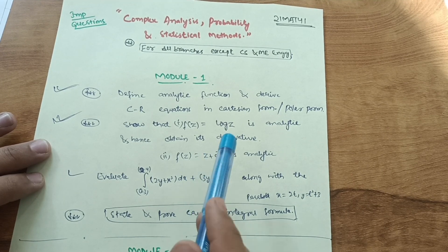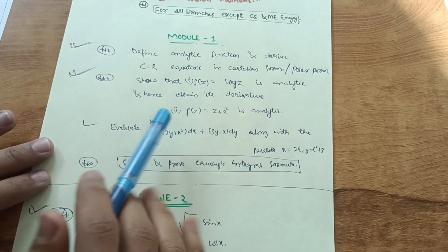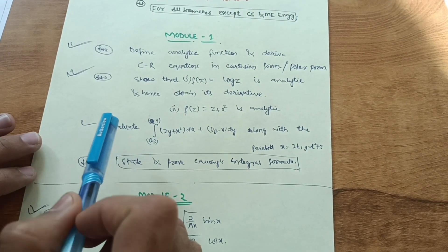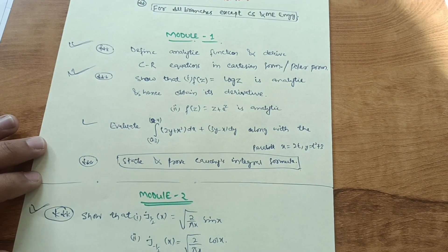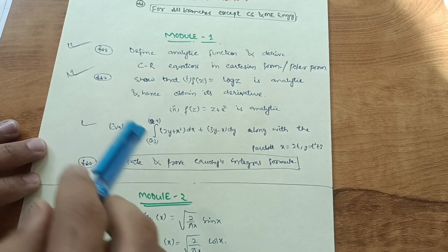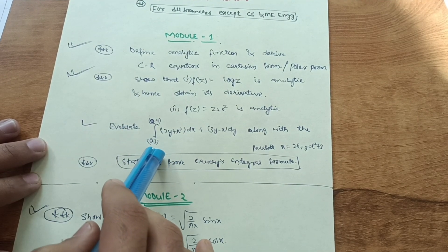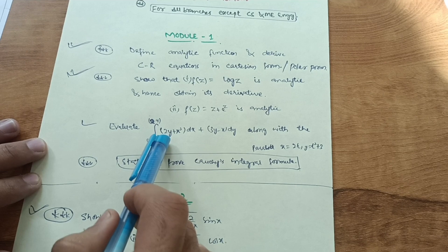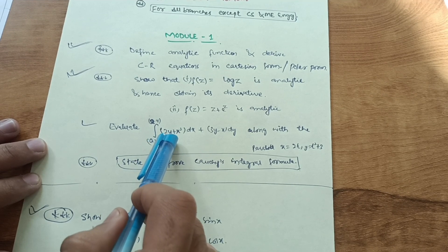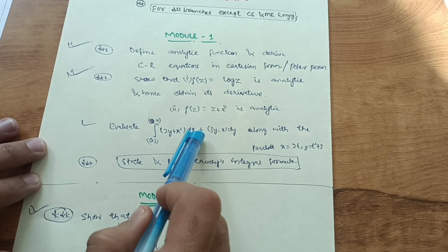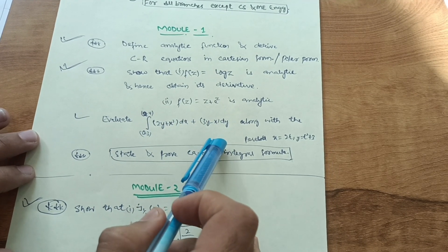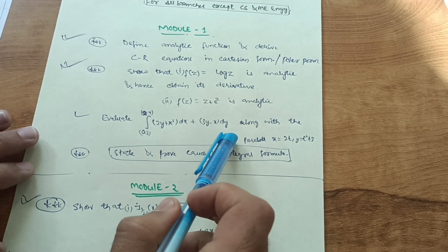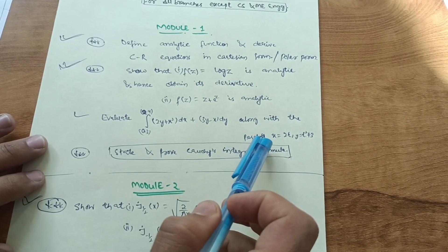There are also evaluate problems — integral problems. If you are good in integration, you should go through these. For example: evaluate the integral from (0.3) to (2.4) of (2y + x²)dx + (3y − x)dy along a parabola. Different parametric curves may also be given.